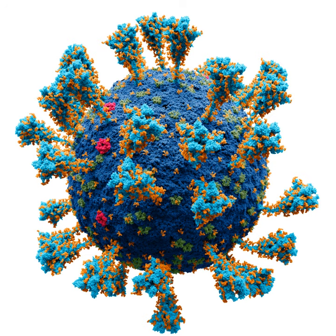2. Cellular Origin Theory: Some viruses may have evolved from bits of DNA or RNA that escaped from the genes of a larger organism. The escaped DNA could have come from plasmids, pieces of DNA that can move between cells, while others may have evolved from bacteria. 3. Co-evolution Theory: Viruses may have evolved from complex molecules of protein and DNA at the same time as cells first appeared on Earth, and would have been dependent on cellular life for many millions of years.